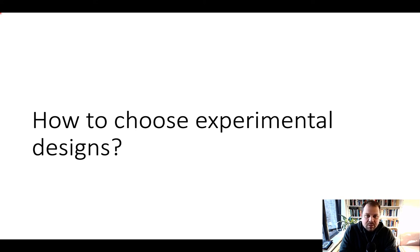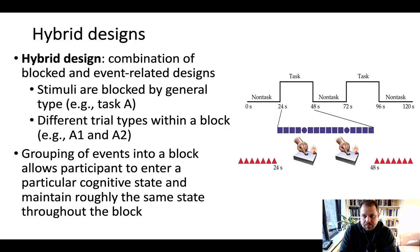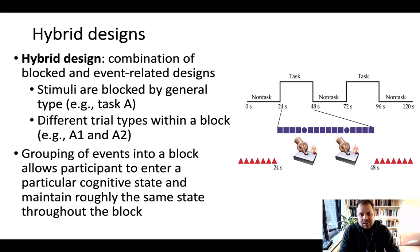So now let's discuss one final design type, namely hybrid designs, and then briefly discuss how we can choose among the different experimental designs: blocked, event-related, and hybrid. Hybrid designs, as the name already says, are a combination of blocked and event-related designs.